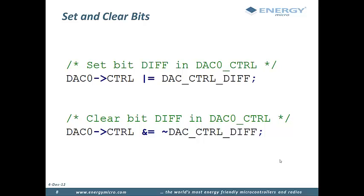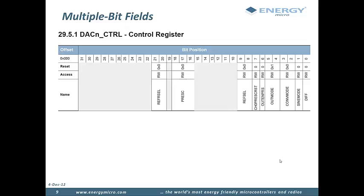When setting an individual bit in a register you should make sure you do not unintentionally clear other bits in that same register. A common method to ensure this is to OR the bitmask you want to set with the original register contents. Clearing a bit is done in the same way by ANDing the register contents with an inverted bitmask. Some registers contain bitfields which span multiple bits. For these bitfields there are also constants defined for the values of the bitfields as well as masks where all the bits in the bitfield are set.